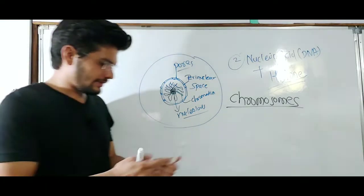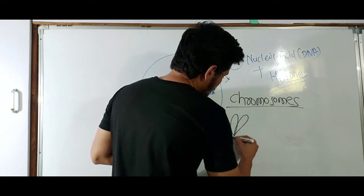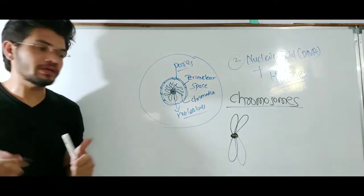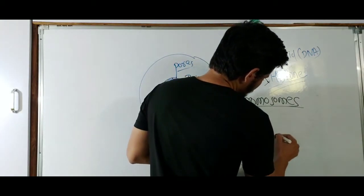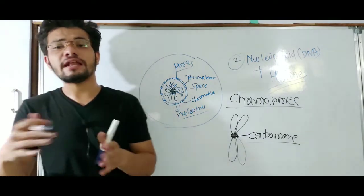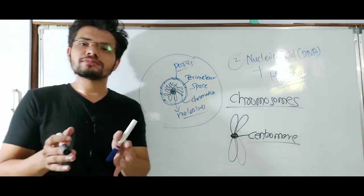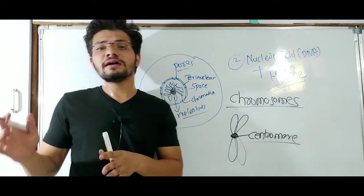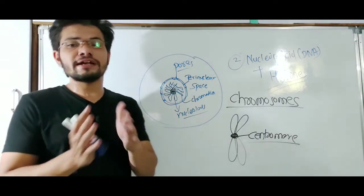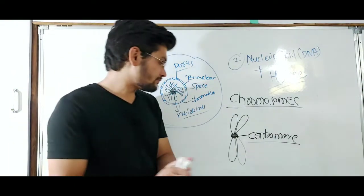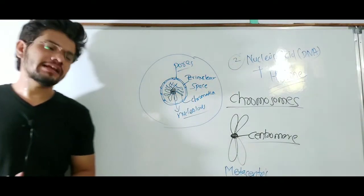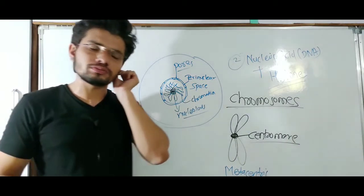Chromosomes consist of nucleic acid, and if you look at the structure of a chromosome, it has a circular structure at its center known as the centromere. According to the location of the centromere, chromosomes can be classified into four categories: metacentric, submetacentric, acrocentric, and telocentric. If the centromere is present at the center, dividing the chromosome into two equal parts, it is known as metacentric.